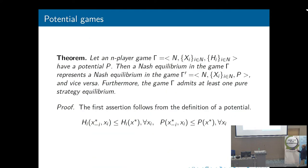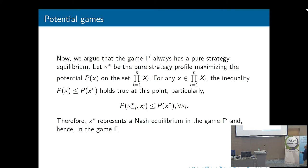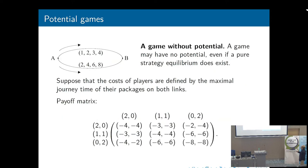The main theorem here was proven by Monderer and Shapley. If we consider an N-player game Gamma and this game is potential, then a Nash equilibrium in game Gamma coincides with the Nash equilibrium in game Gamma-prime, where instead of player functions hi we write the potential functions. This game admits at least one pure strategy Nash equilibrium, and the profile X-prime which gives the maximum of the potential function is a Nash equilibrium.